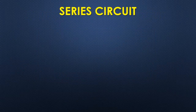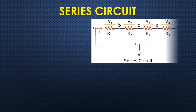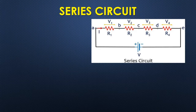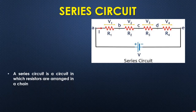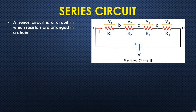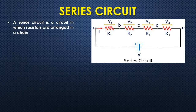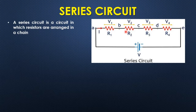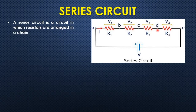Let's start with the series circuit. The series circuit looks like this. I have connected four resistances R1, R2, R3, and R4 in series. A series circuit is a circuit in which resistors are arranged in a chain. You can see R1 and R2 are connected back to back. They have a common point B which serves as a link between R1 and R2. Similarly, R2 and R3 have a common link C, and R3 and R4 have the common link D.